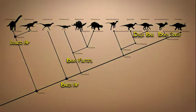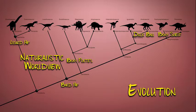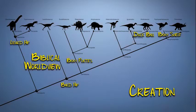A scientist with a naturalistic worldview would interpret these differences as being the result of evolution. A scientist with a biblical worldview would interpret them as being the result of different groups having been created with different designs.